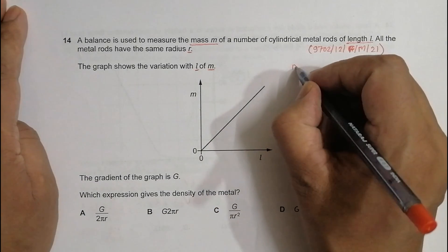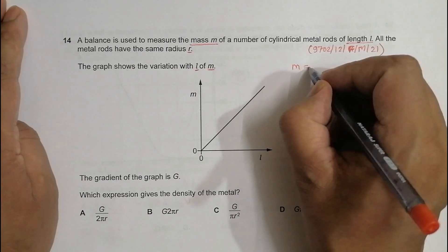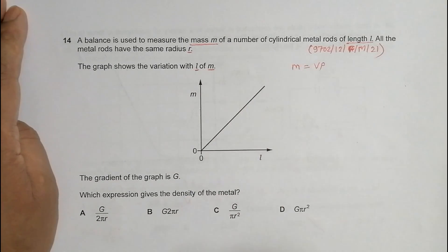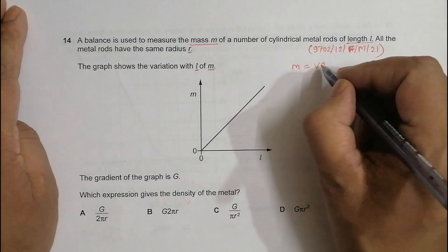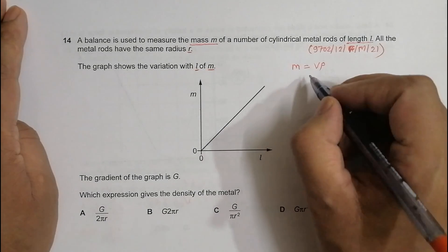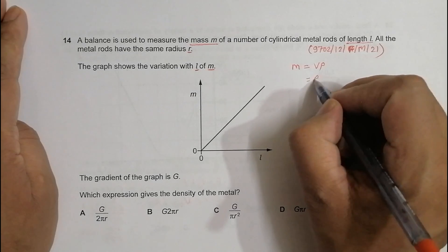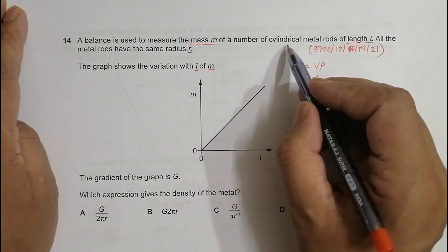So what we have is the mass of a body is related to the density as V into ρ, or ρ into V. We can use both. So this gives us ρ first. Here, since the rods are cylindrical...